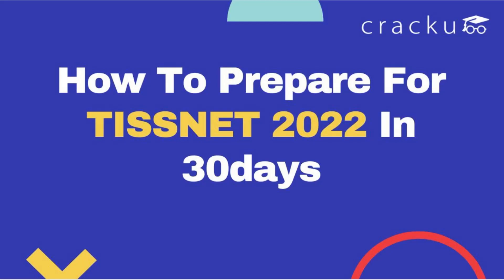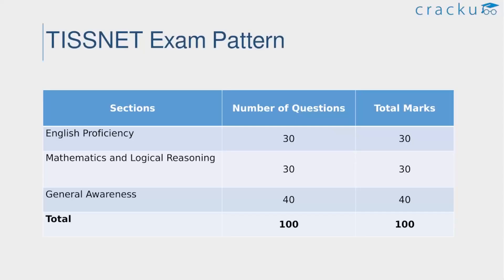At the end of this video you can get an idea of TISNET preparations section-wise in 30 days. Before going to the strategy, let's have a quick view of the exam pattern of TISNET. For English Proficiency we have 30 questions with 30 marks, for Mathematics and Logical Reasoning 30 questions and 30 marks, and lastly General Awareness which gives 40 questions with 40 marks — this is the best section to make a high score.